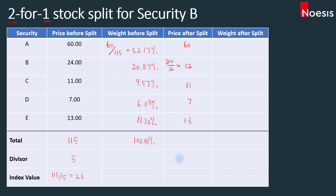Now the question is, how do we recalculate the divisor after this stock split? Because we can't use 5 anymore. We will still total up: 60 plus 12 plus 11 plus 7 plus 13, which gives us 103. In order to recalculate the divisor, remember that the index value will have to be the same before and after the split, because in essence there is no change in value — there is only a change in terms of the number of shares available. So we take 103 divided by 23, which gives us 4.478. The divisor has declined from 5 to 4.478.